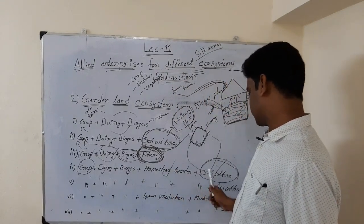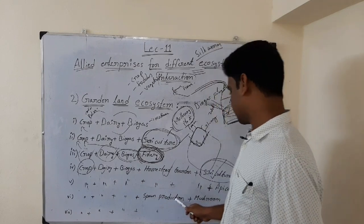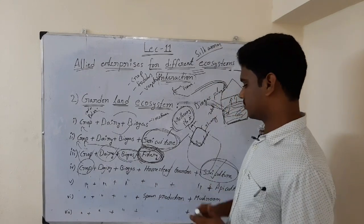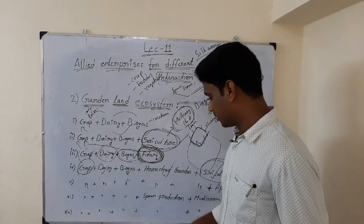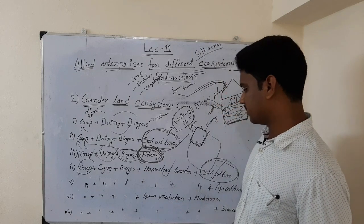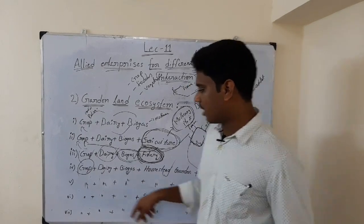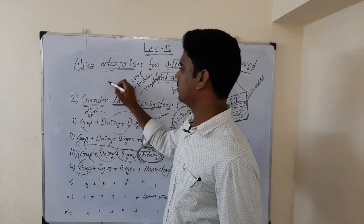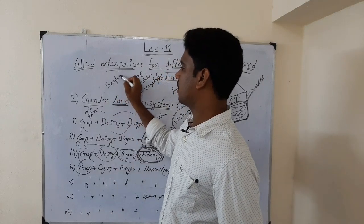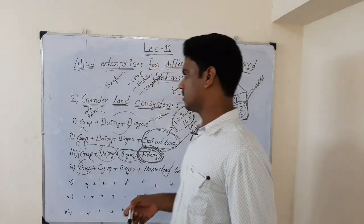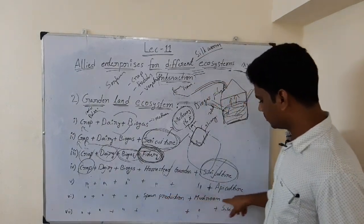The sixth model replaces homestead garden, silviculture, and apiculture with spawn production plus mushroom cultivation. For spawn production, we mostly go for sorghum or maize as the base crop. Spawn production means producing the seeding material for mushroom cultivation.